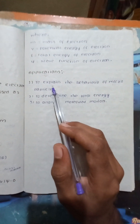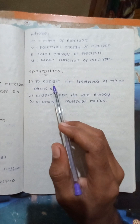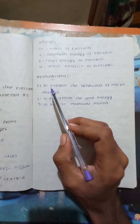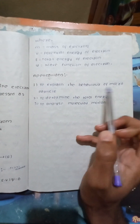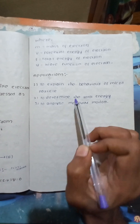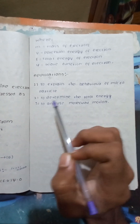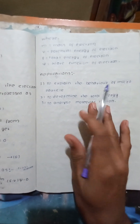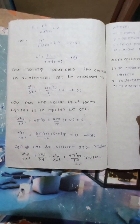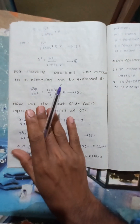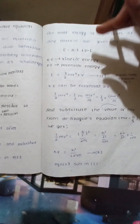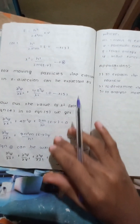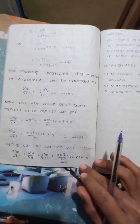Some basic applications of the Schrödinger wave equation include: to explain the behavior of microparticles, to determine the total energy, and to analyze molecular motion.